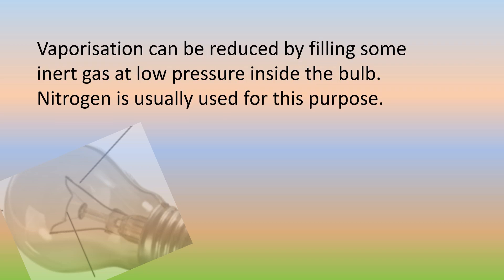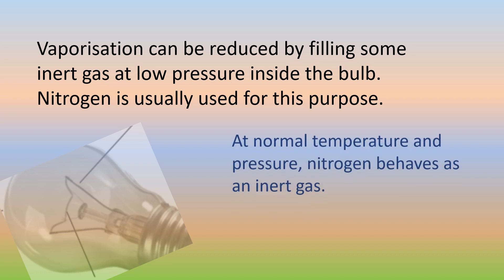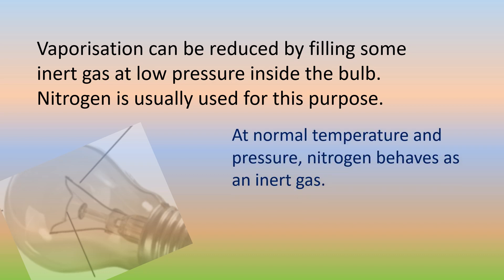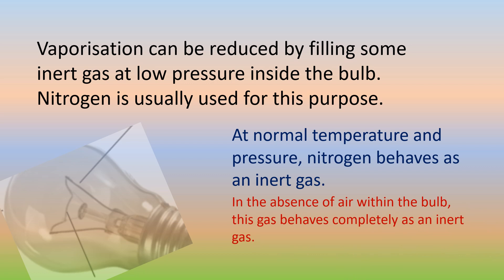Tungsten can become white hot and emit white light for a long time. In order to avoid oxidation of tungsten the bulb is evacuated. Vaporization can be reduced by filling some inert gas at low pressure inside the bulb. Nitrogen is usually used for this purpose, as at normal temperature and pressure nitrogen behaves as an inert gas and is readily available.